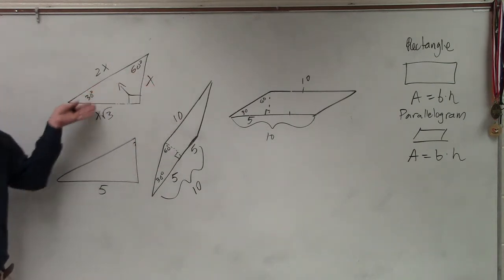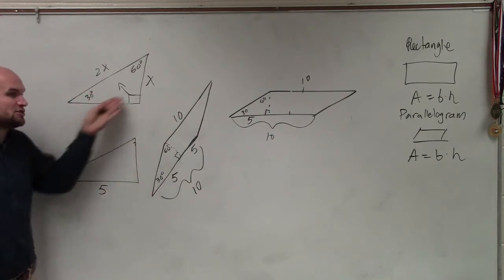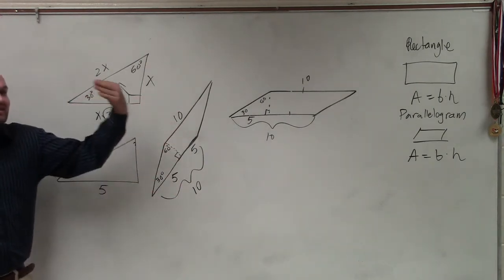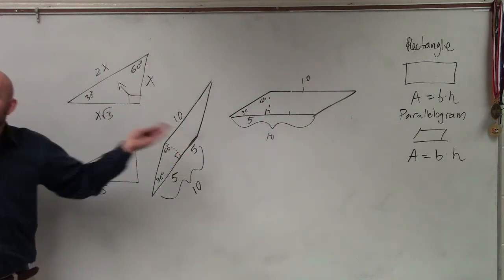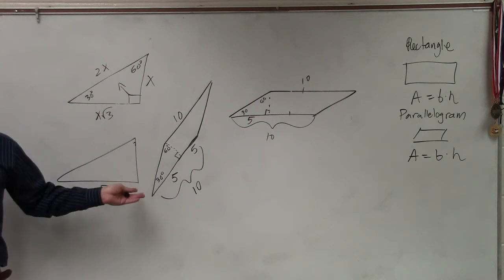To go from the short to the long, you multiply by the square root of 3. So, to go from the long to the short, you'd have to divide by the square root of 3. So, to go from 5 to the short, I'm going to have to divide by the square root of 3.